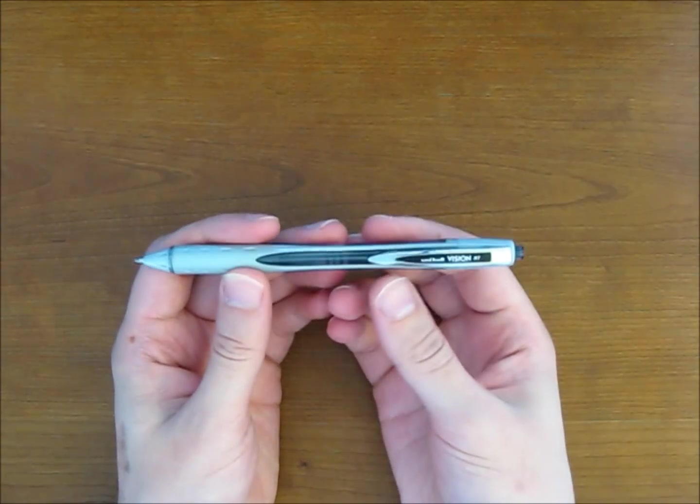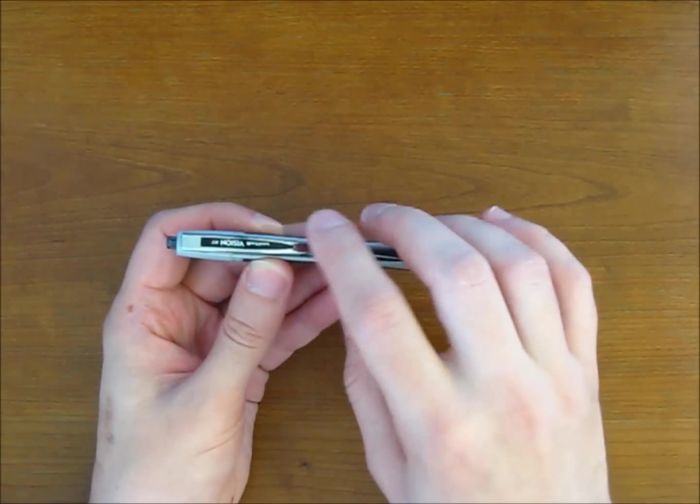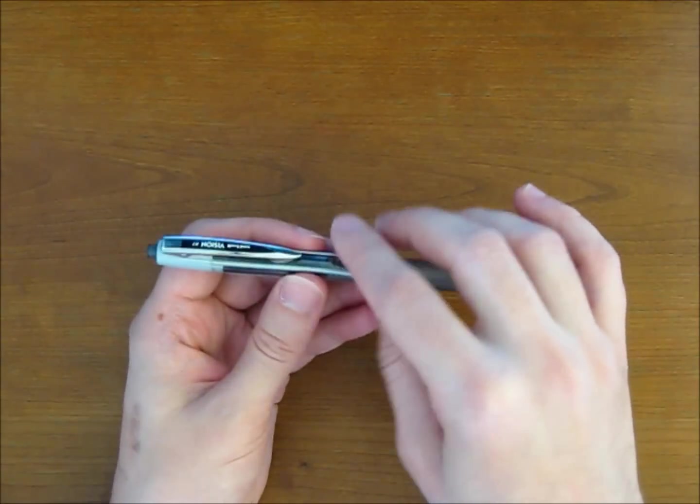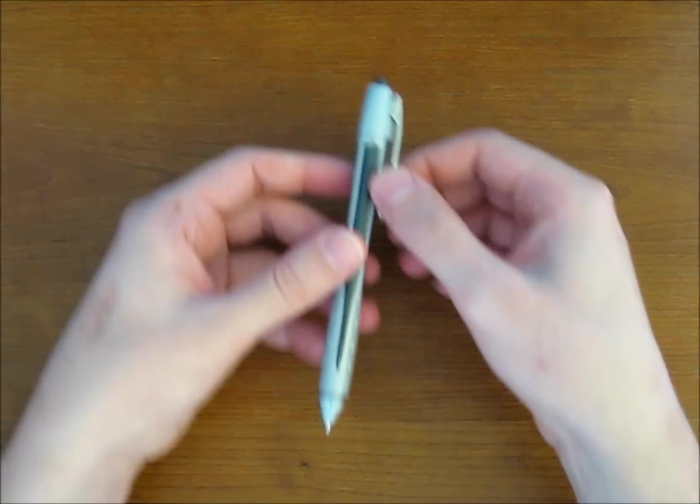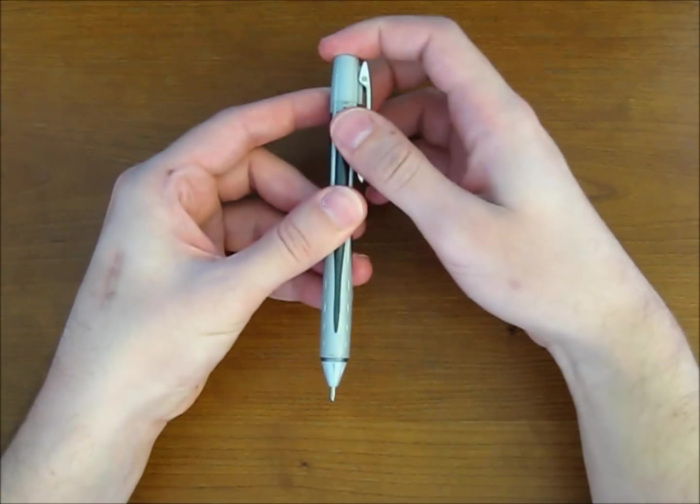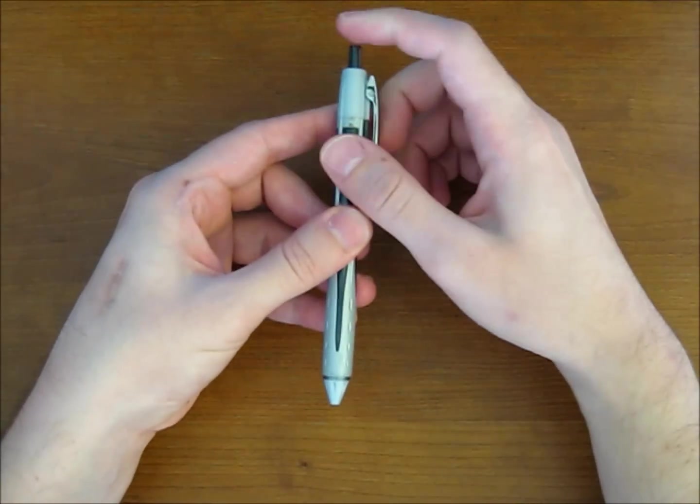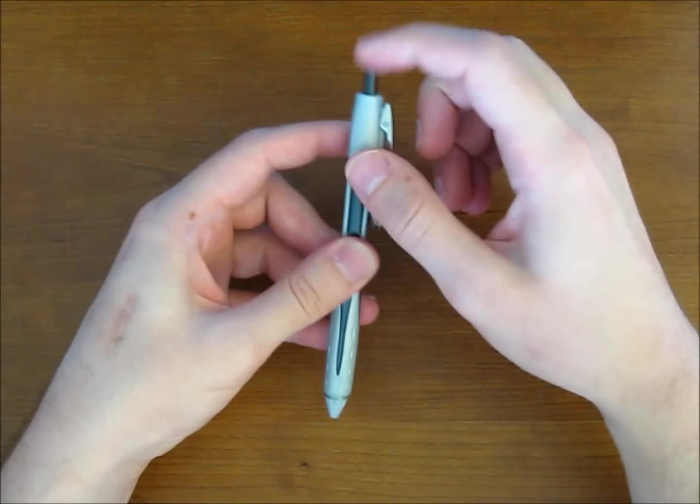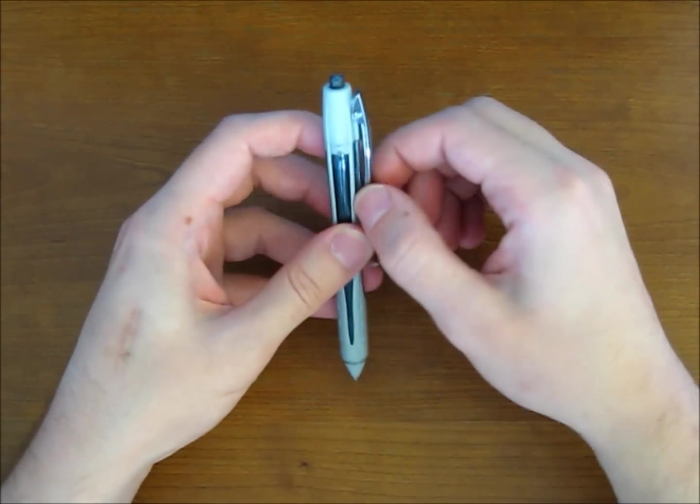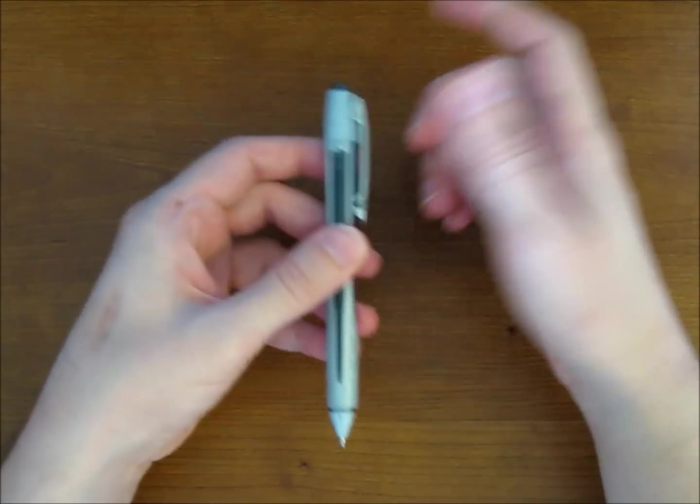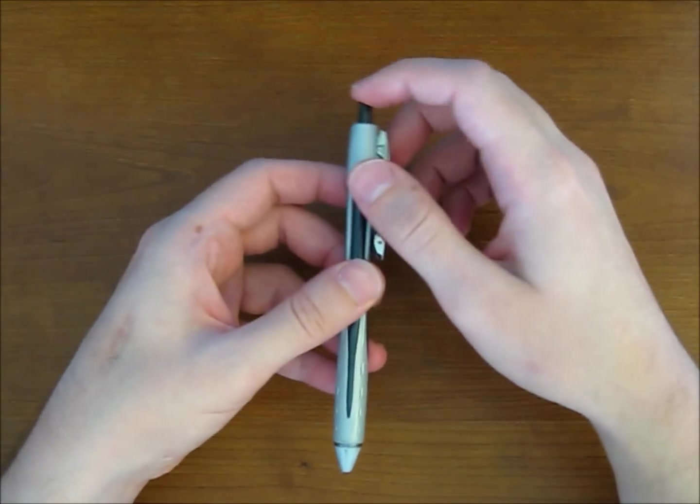And another neat feature, if you take a look at the clip here, which is very good quality metal construction, not cheap at all. It's spring loaded, so when you touch the clip, the tip automatically retracts. So when the pen is in your pocket, there's no worries about accidentally forgetting to retract it and getting ink on your clothes or anything like that.